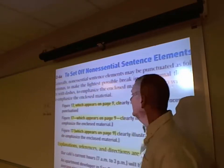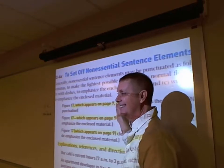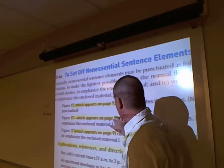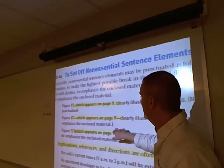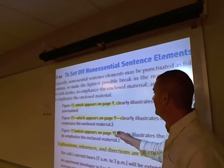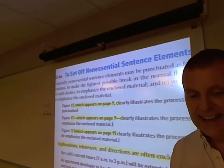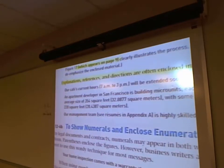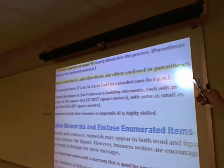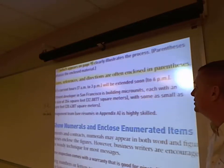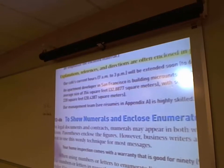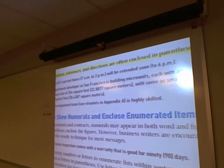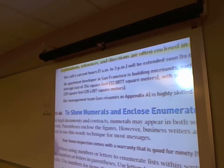Explanations, references, and directions are often enclosed in parentheses. 'Our phase (current hours: 7 to 3) will be extended soon to 6 p.m.' An apartment developer in San Francisco is building micro-units, each with an average size of 350 square feet (32.8877 square meters). With some as small as 220 square feet — the equivalent in meters is noted in parentheses. 'Our management team (see resumes in Appendix A) is highly skilled' — that parenthesis item is not capitalized.